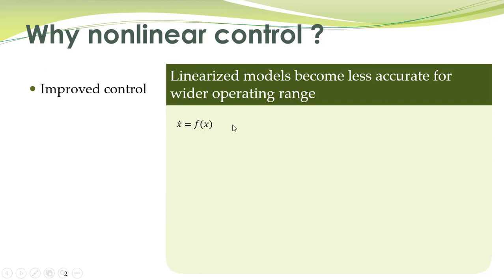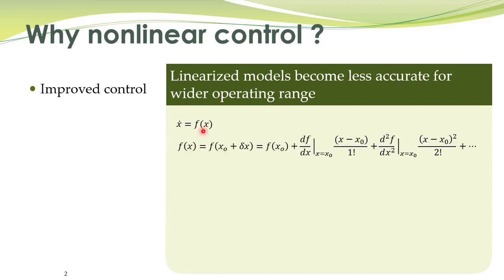A general non-linear model is given by the equation x-dot equals f(x), where f(x) is some non-linear function of x. The Taylor series expansion of a non-linear function about some operating point is given by: the non-linear function evaluated at the equilibrium point, plus the derivative of this function with respect to its argument x — also evaluated at the equilibrium point — multiplied by (x minus x-naught) divided by 1 factorial, plus the second derivative and likewise higher-order terms.